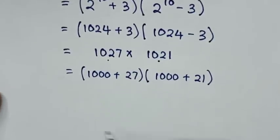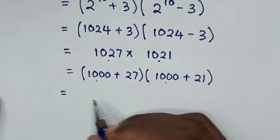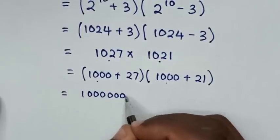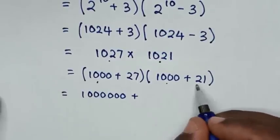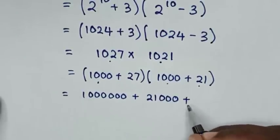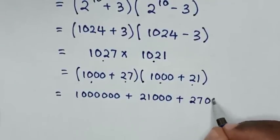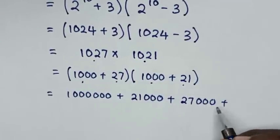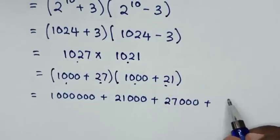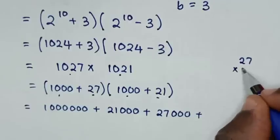Then it will be equal to 1000 times 1000, which is 1 million — 1 with 6 zeros — plus 1000 times 21 is 21,000, plus 27 times 1000 is 27,000, plus 27 times 21. We will multiply that by long form: 27 times 21.